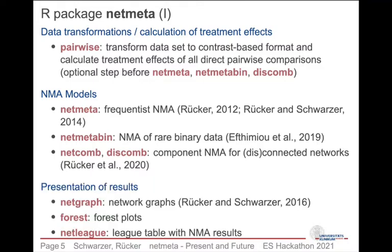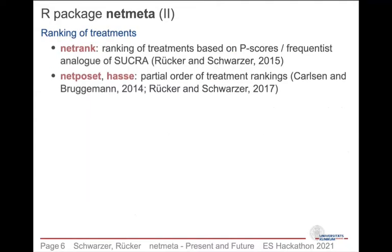Results can then be shown as network graphs, forest plots, or in league tables. Treatment rankings can be produced using NetRank, which implements P-scores — the frequentist analog to SUCRA values used in a Bayesian setting. If you have more than one outcome, you can order treatments using NetPOSET, which implements partial order of treatment rankings and the Hasse diagram.